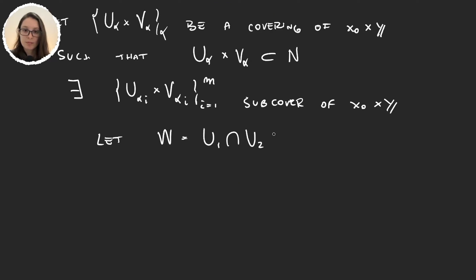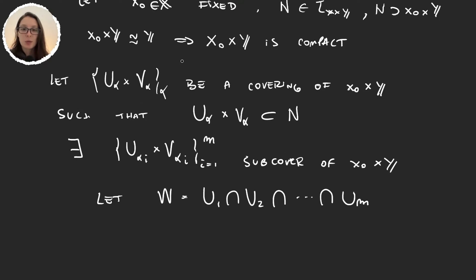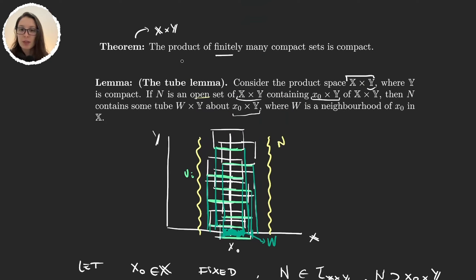So in our lemma we have to find W such that W times Y was a neighborhood of this. Well, we have this, but now what we need to see is that W times Y is contained in this set N that we took originally.